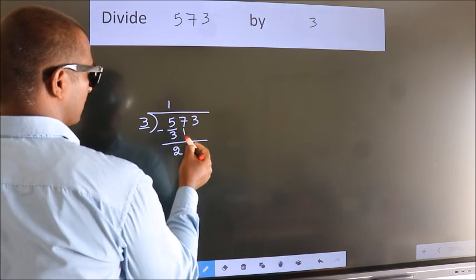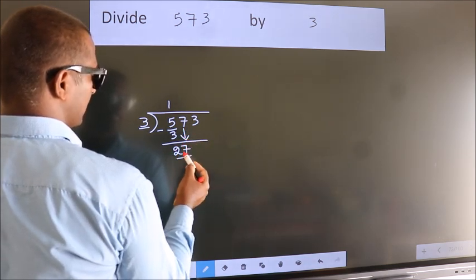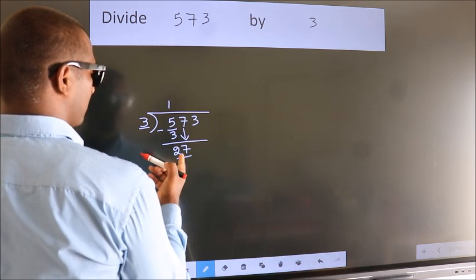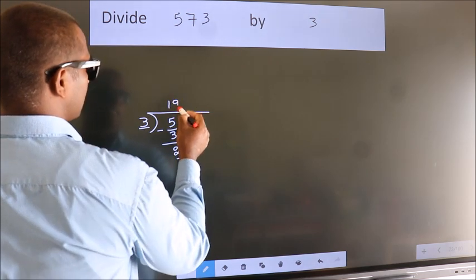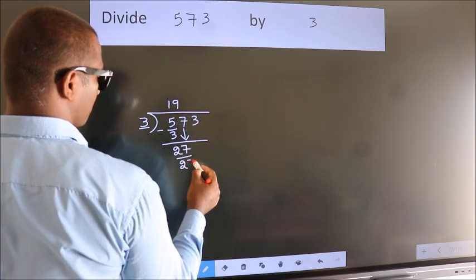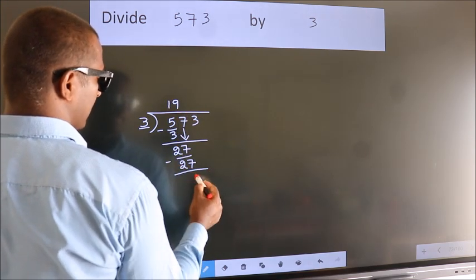After this, bring down the beside number. So 7 down, giving us 27. When do we get 27? In the 3 table, 3 9s 27. Now we subtract. We get 0.